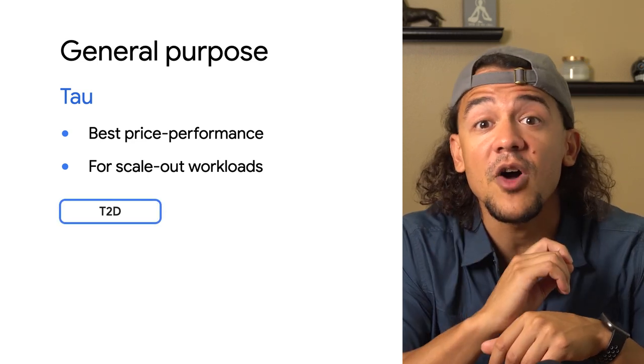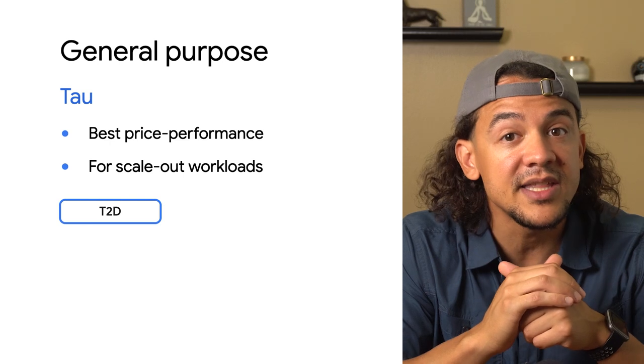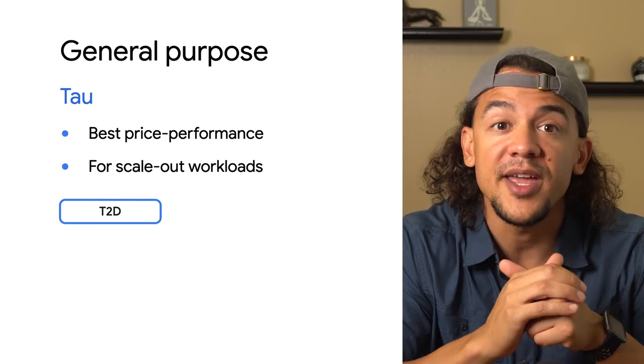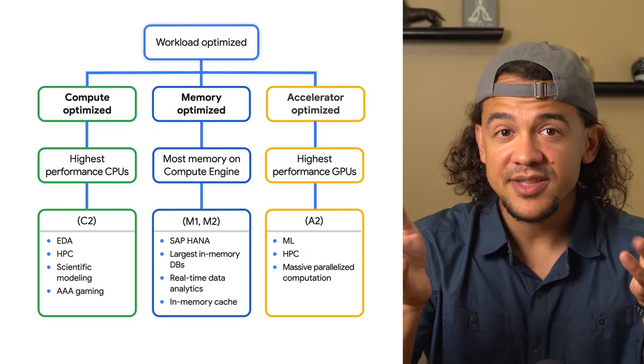T2D is our first offering in the TAU family and provides full x86 compatibility on third-gen AMD EPYC processors. As you go through the three types of general purpose machines — Efficient, Balanced, and TAU — they each have different levels of price performance. Efficient achieves the best price, Balanced sits in between providing the most feature flexibility, and TAU has the best price performance ratio.